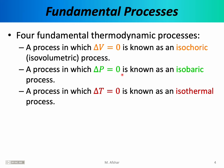If the ideal gas is manipulated in such a way that its temperature remains constant, then what we have is an isothermal process. In an isothermal process, we can say that the initial temperature is equal to the final temperature for the ideal gas.